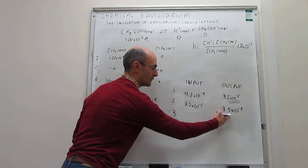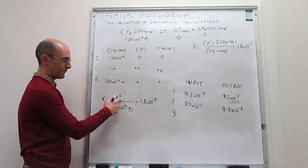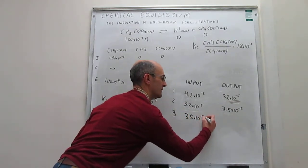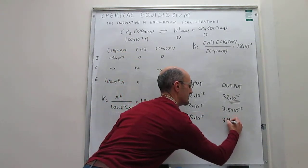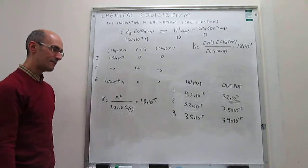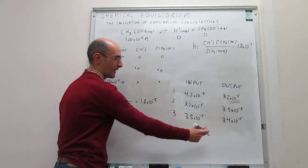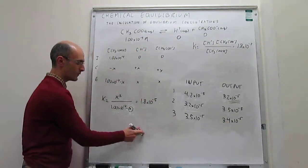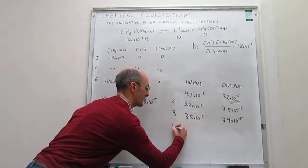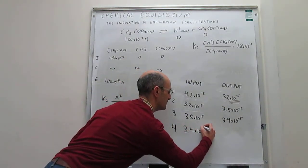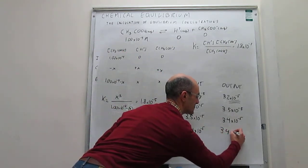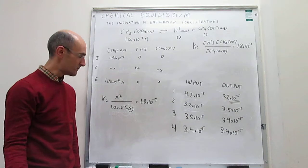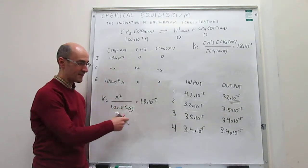For the third iteration, we take the output 3.5×10⁻⁵, plug it into the denominator, and solve for x, obtaining 3.4×10⁻⁵ — we are getting very close. In the fourth iteration, we plug 3.4×10⁻⁵ into the denominator and find the solution is also 3.4×10⁻⁵. The input and output now match, so we have converged to the actual solution, which is the same value you would get from the quadratic formula.